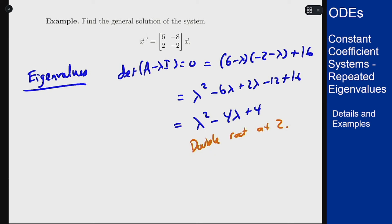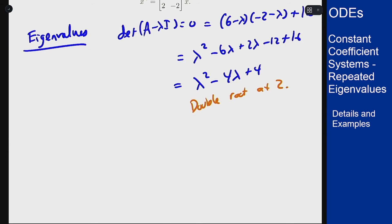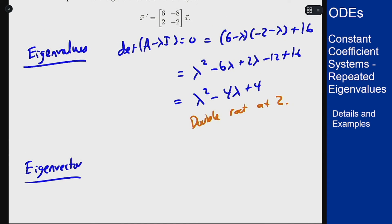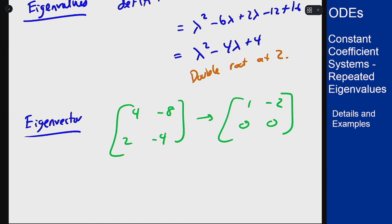We found that double root, now let's find an eigenvector—at least one, hopefully you'd find two but we won't in this case, so let's look for eigenvectors. We're subtracting 2 off the diagonal, so I end up with a matrix that is [4, -8; 2, -4], which will reduce to [1, -2; 0, 0], which means an eigenvector here is [2; 1].